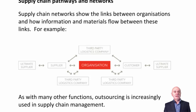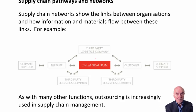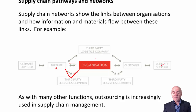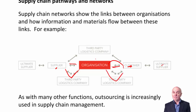Supply chain networks show the links between organisations, and how information and materials flow between them. We have our organisation in the middle. For some parts we might order from a supplier, who goes to the raw material manufacturer — delivered directly to us, or through a third party. Similarly, the ultimate customer might go to a shop, the shop goes to the manufacturer, who could deliver directly or through a logistics company. These are just choices we have.